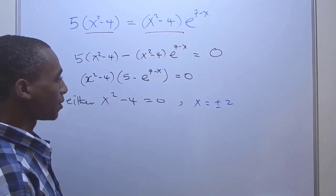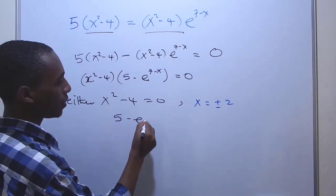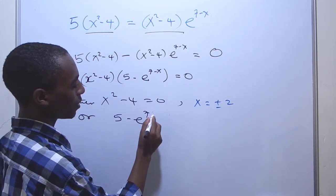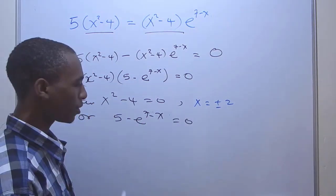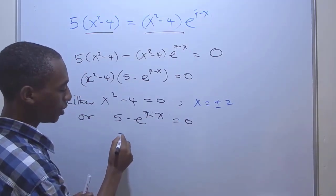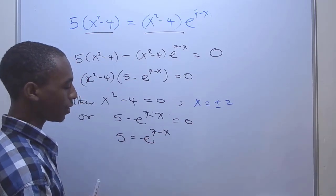So the second part, I'm going to take this now: 5 - e^(7-x). So this is the other part. It's not 7x, it's 7 - x equals zero. So what do we do here? I'll take this to the right hand side: 5 = e^(7-x).